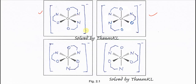Another change you need to make is to switch the oxygens and nitrogens to different sides. When you switch them, the oxygens and nitrogens are no longer in the same plane — the O-Cr-O bond angle becomes 90 degrees, meaning they are not in the same plane anymore.